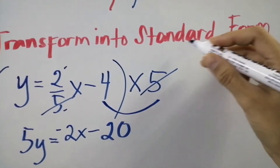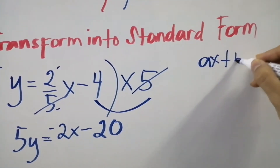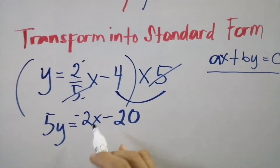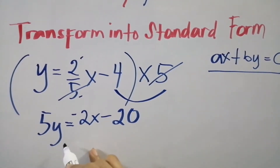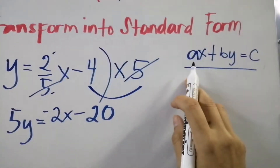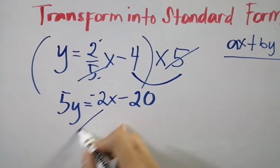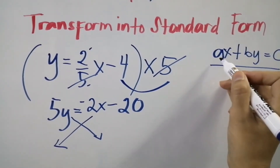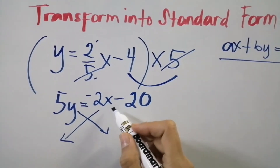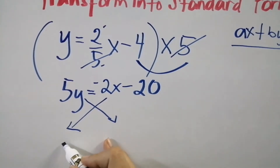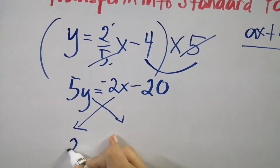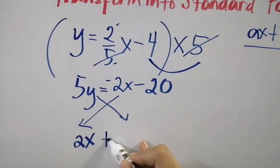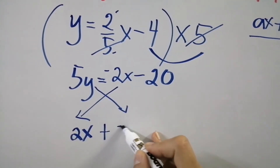As you can see, we are not yet in standard form. The formula of standard form is Ax plus By equals C. Now x and y are on opposite sides, so we follow this equation. Our a is negative 2x — we will convert it into positive 2x, from negative to positive. And 5y will change from positive to negative 5y.